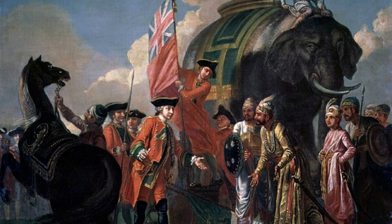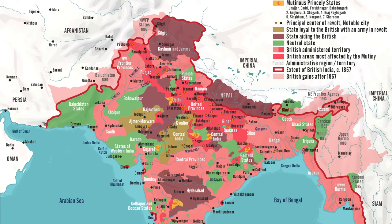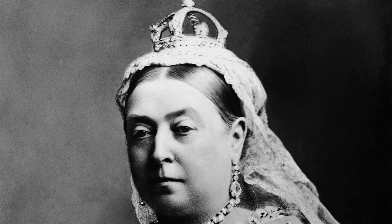Ultimately, the British East India Company ruled over large tracts of the subcontinent, either directly or indirectly, until the Indian Rebellion, or Sepoy Mutiny, of 1857. At that point, in 1858, control was handed over to the British government, now known as the British Raj. The British government passed the Government of India Act in 1858, which transferred the power to govern India from the East India Company to the British Crown, marking the beginning of the British Raj, which lasted until India gained independence nearly 90 years later in 1947.